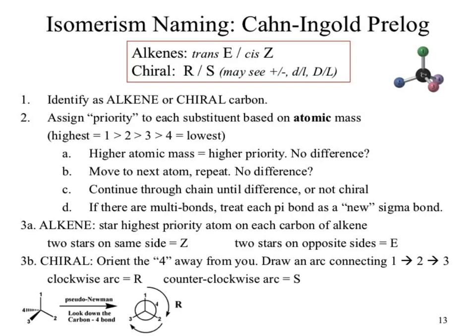For alkenes: trans is E, cis is Z. For chiral atoms: R and S. You may also see plus/minus, lowercase d and l, and capital D and L for labeling chiral molecules. Of those four different systems, they are not related — all four use entirely different reasoning behind their labeling. Do not cross-communicate between them.